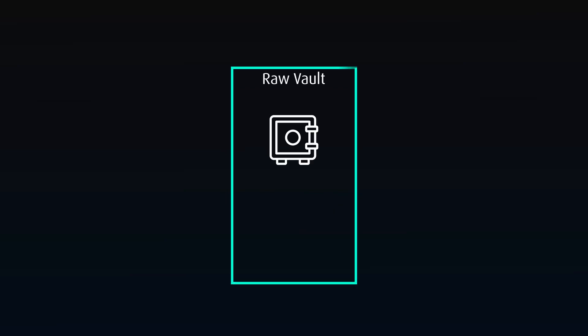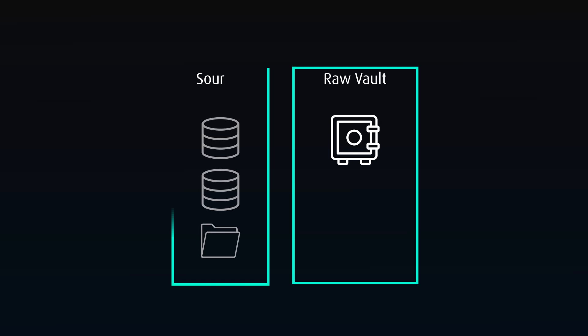The core architecture of the Data Vault revolves around the raw vault. This is where source data is stored — it is remodeled but otherwise unchanged. Duplicates, conflicting values, and inconsistent labels are all kept.